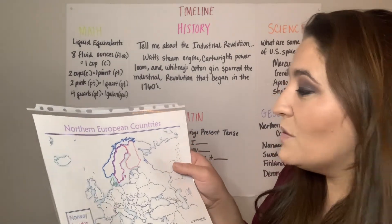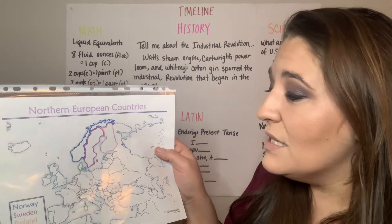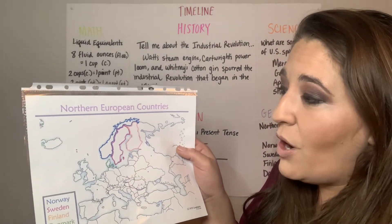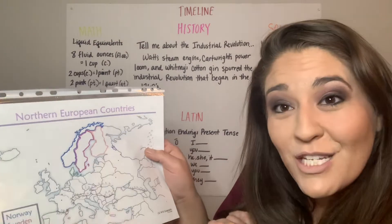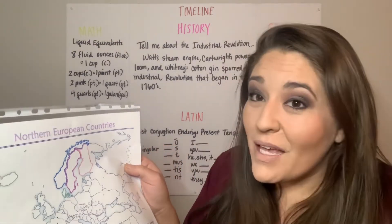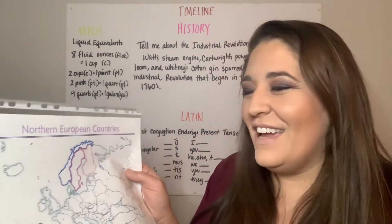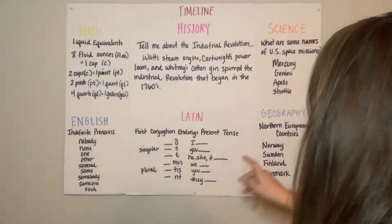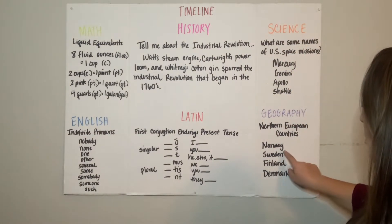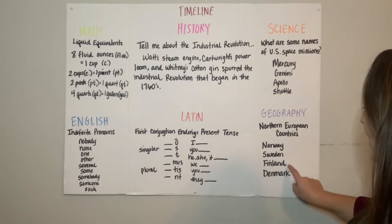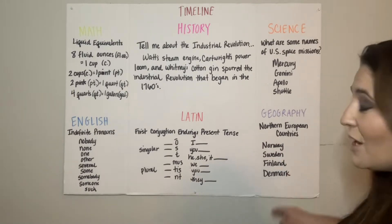The Northern European countries are Norway, Sweden, Finland, Denmark — sung to Baby Shark. We went through them and then asked the children to show on the map where each country is: show me Norway, show me Sweden, show me Finland, show me Denmark.